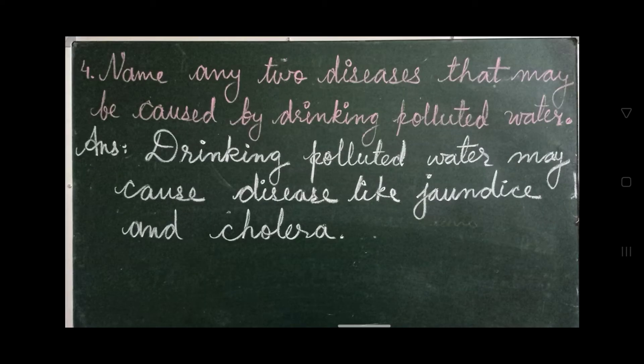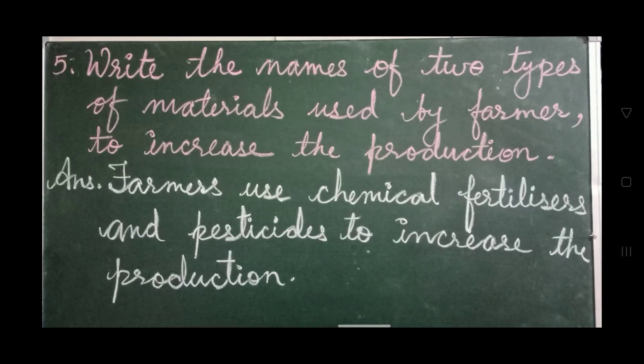Question number 4: Name any two diseases that may be caused by drinking polluted water. Answer: Drinking polluted water may cause diseases like jaundice and cholera. The last question of D: Write the names of two types of materials used by farmers to increase production. Answer: Farmers use chemical fertilizers and pesticides to increase production.